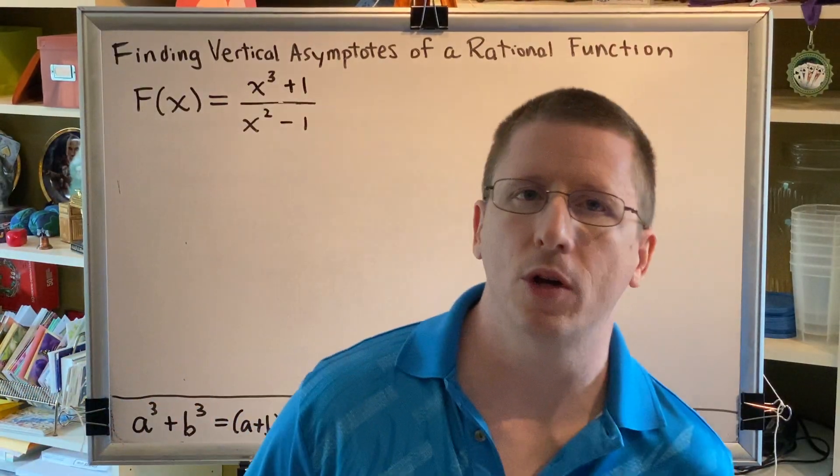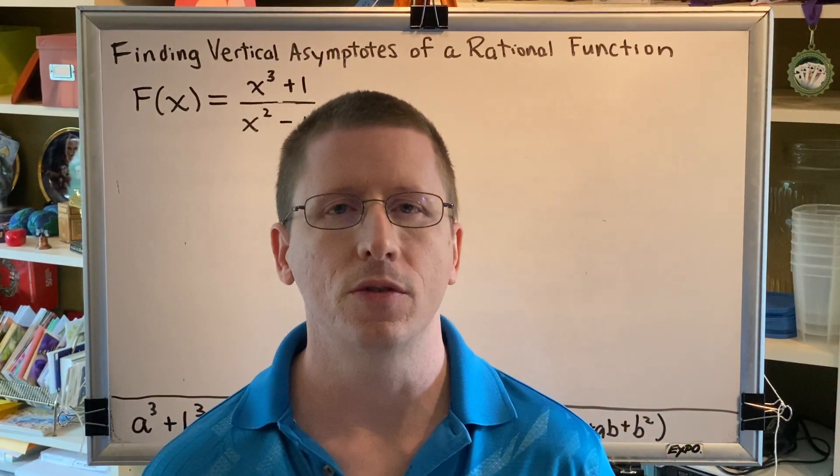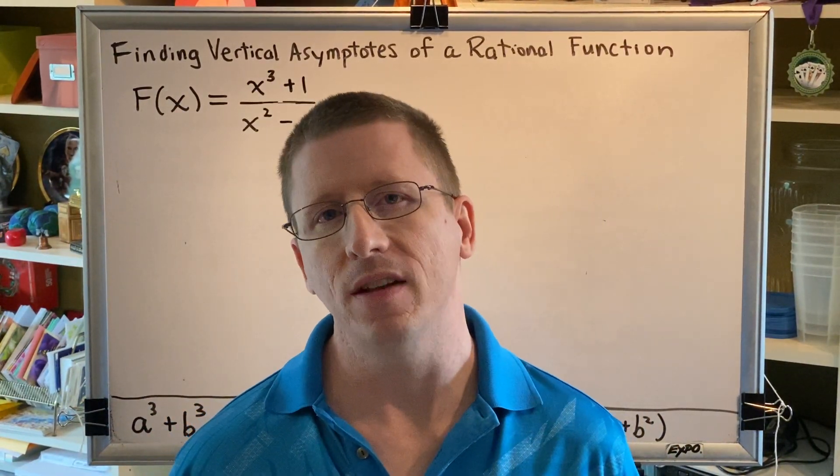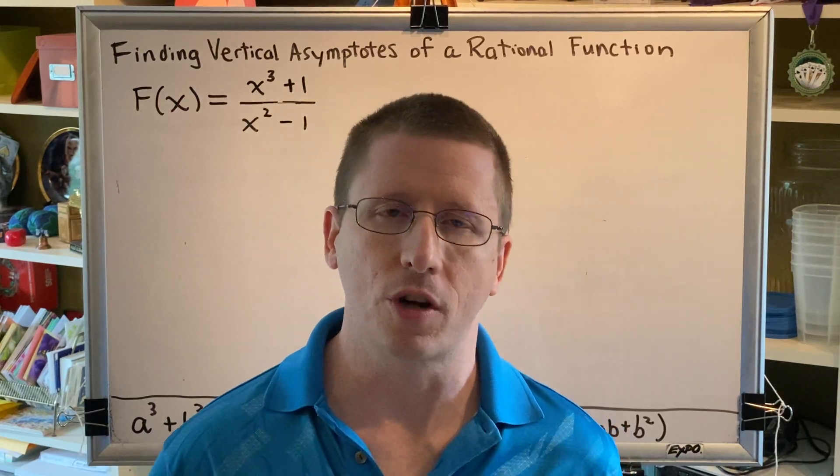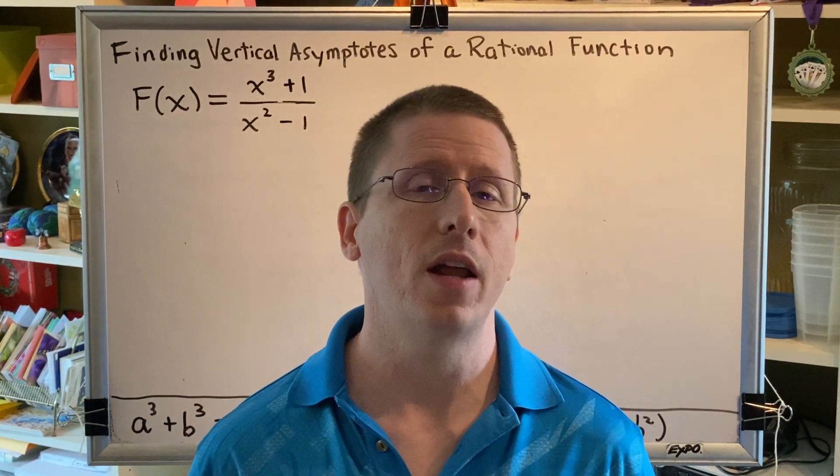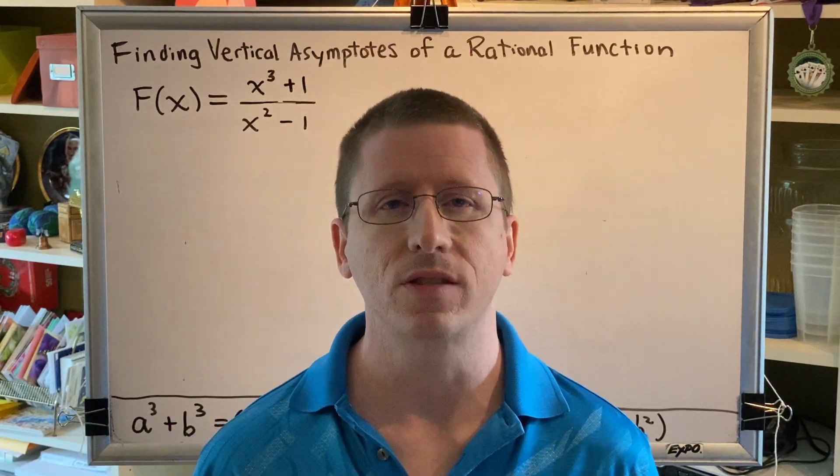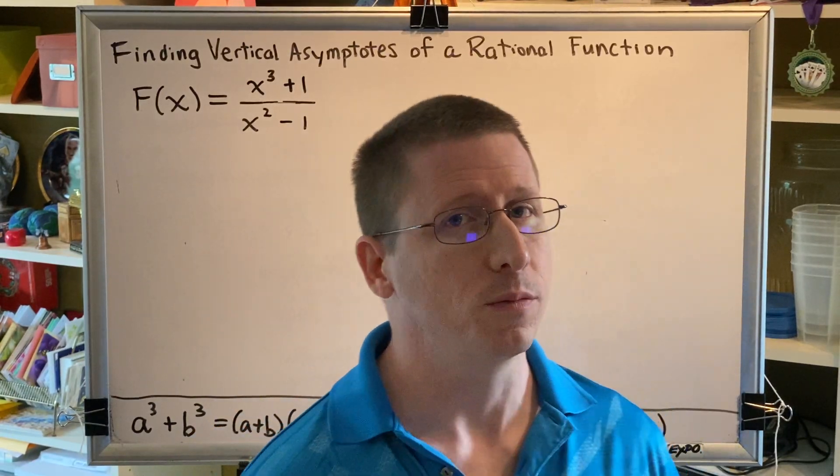Okay, the steps for finding vertical asymptotes of a rational function are as follows. Factor each numerator and denominator and reduce to lowest terms. Then, set the reduced denominator equal to 0 and solve for x. That will give you your vertical asymptotes, if any.